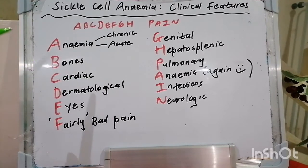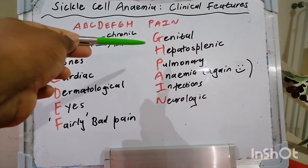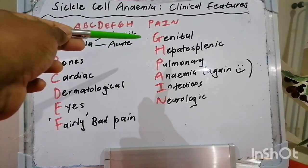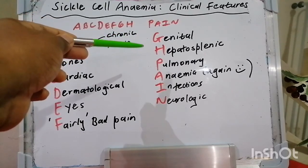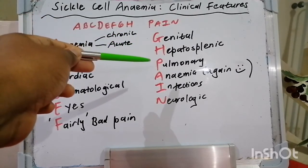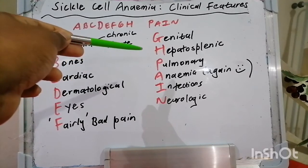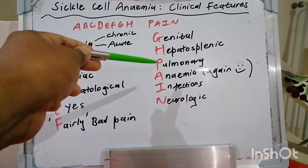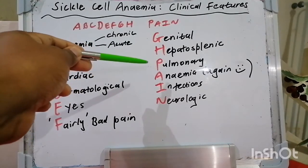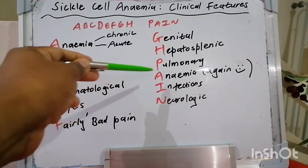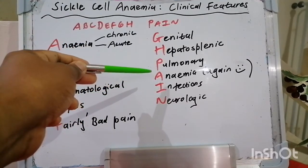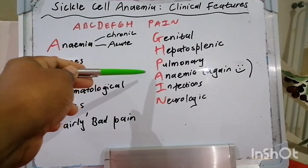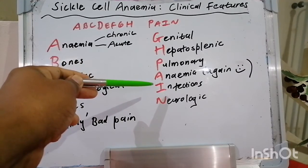G stands for genital, in the way of priapism. H is for hepatosplenic, presenting as splenic infarct, acute hepatic ischemia, hepatic or splenic sequestration crises, and iron overload especially when you transfuse these patients often. P stands for pulmonary, presenting as restrictive lung disease as a result of chronic interstitial fibrosis; you can also get obstructive lung disease, hypoxemia, pulmonary hypertension, and fat embolism. Revisiting anemia — a reminder that anemia in sickle cell disease is associated with both acute and chronic phases.